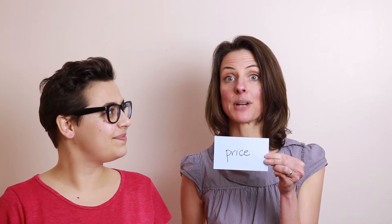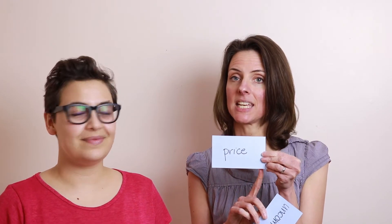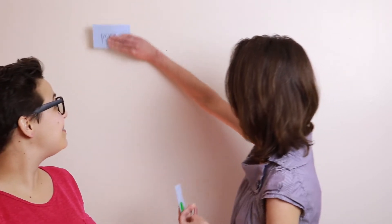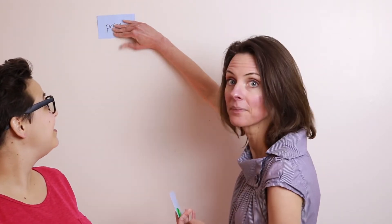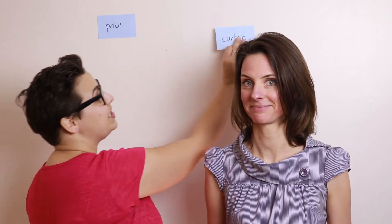I'll go first. I have the word 'price.' Price — C-E. E makes the C soft, so price goes in the soft category. My word is 'curtain.' Curtain — it's followed by a U, so it's the hard sound. Over here it goes.